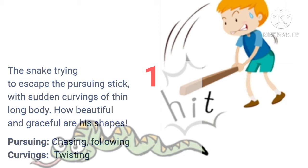The snake trying to escape the pursuing stick, with sudden curvings of thin long body. How beautiful and graceful are his shapes. In these lines, the poet says that the snake tries to escape from being hit by the stick that is following it. As the snake crawls, its long body twists and turns, forming fascinating shapes.